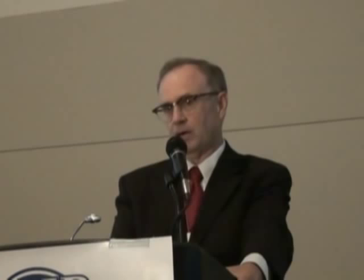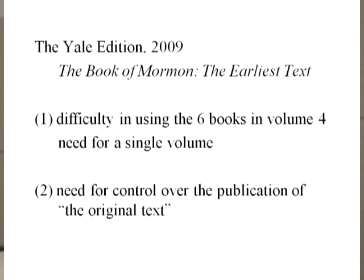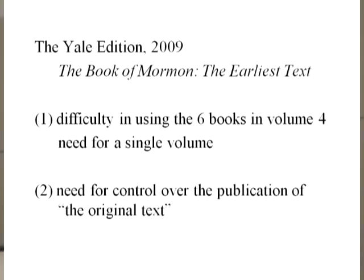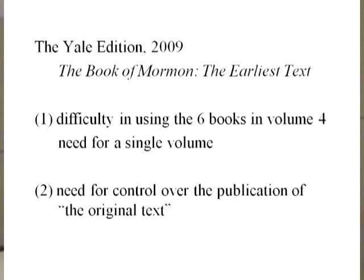Another problem was that with the completion of volume four, anyone could go out and produce a Book of Mormon taking those findings and referring to it as the original text. I decided I would prefer to do this myself. So I arranged with Yale University Press to publish last year the Book of Mormon: The Earliest Text, which in one volume represents the original text to the extent it can be determined. If you take off the cover, it matches the maroon of volume four — done intentionally to show the connection.